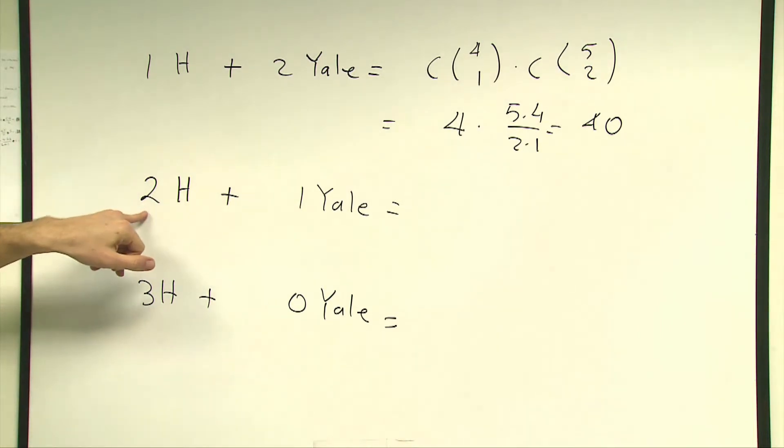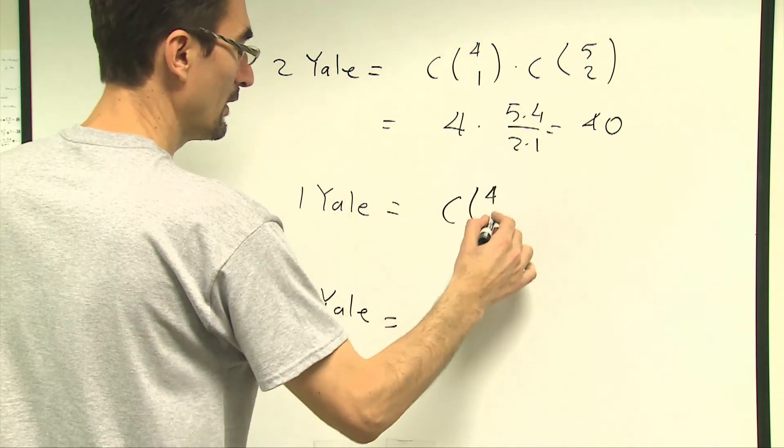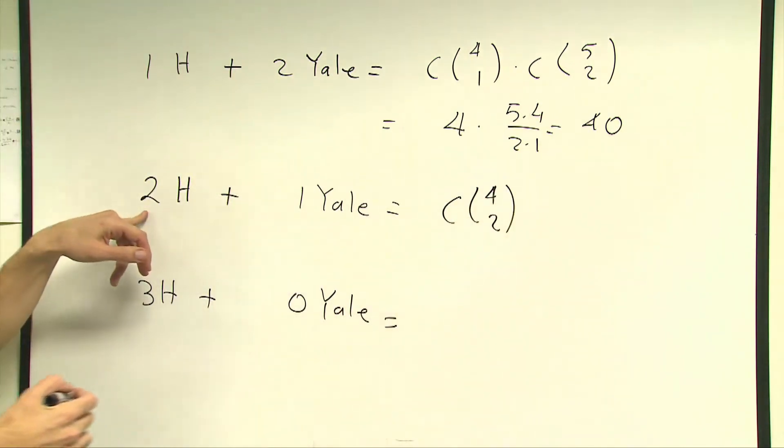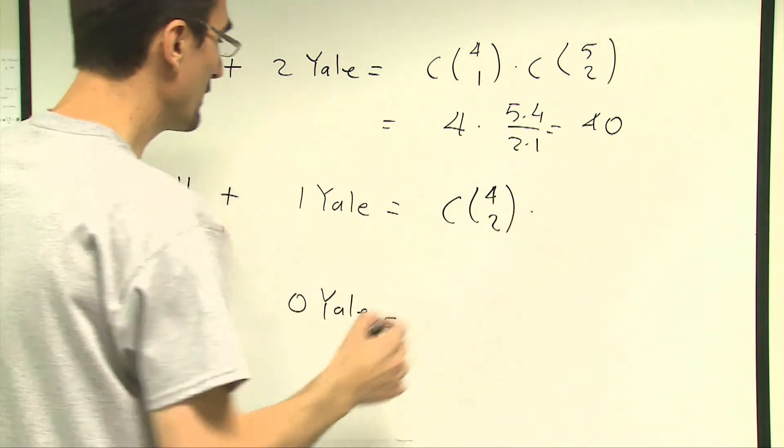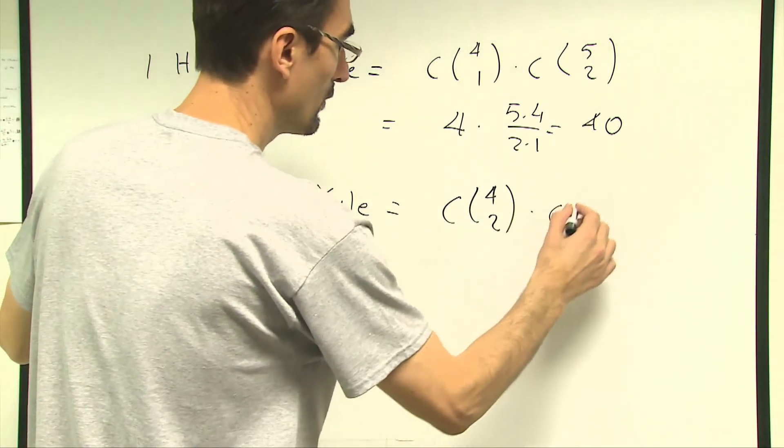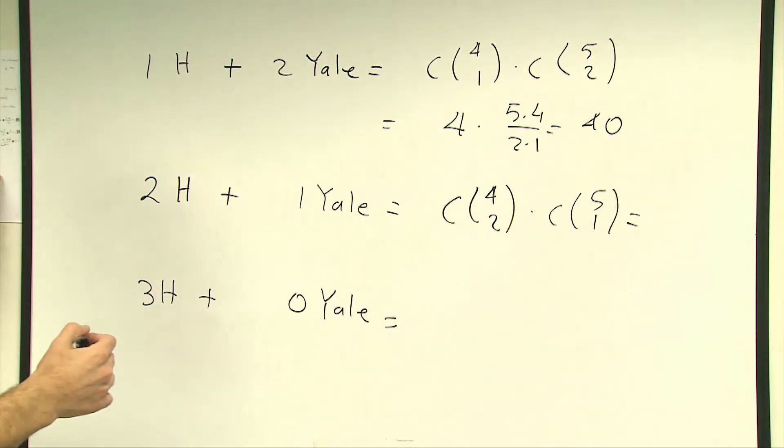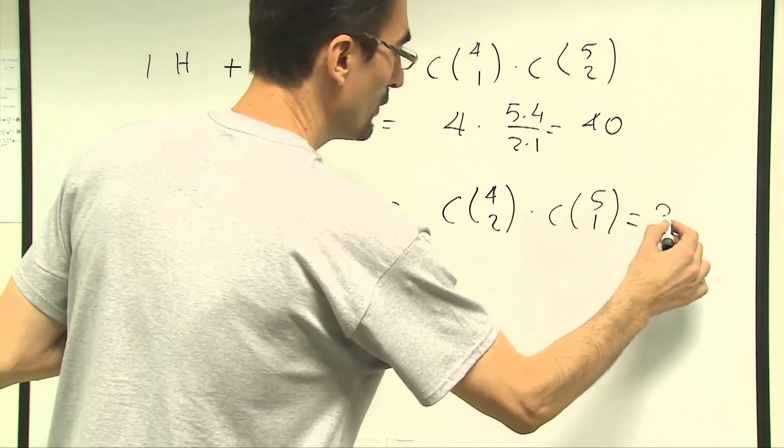In how many ways I can choose two Harvard professors out of four will be a combination problem of four choose two. Times choosing one Yale professor out of five will be equal to combination five choose one. And the answer will be equal to five, one, and after the calculation this should give you 30 ways or 30 groups.